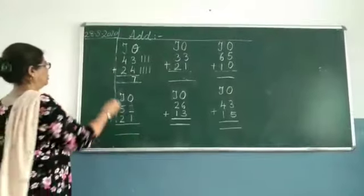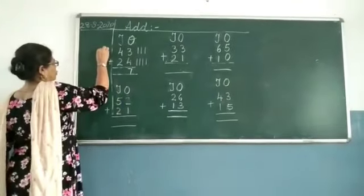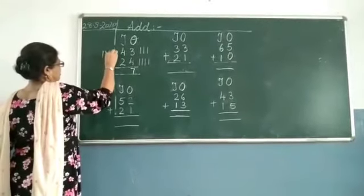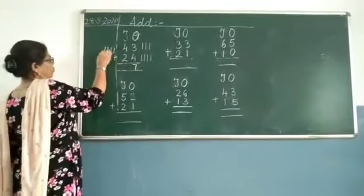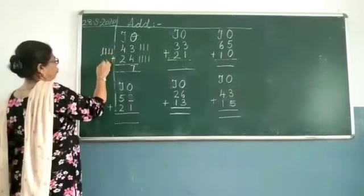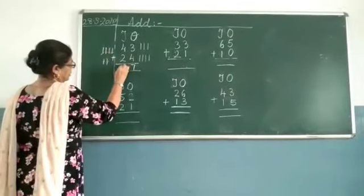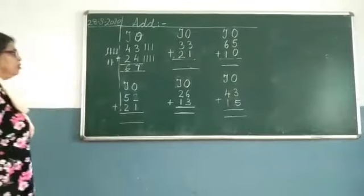4 plus 2. Now first you are going to draw 4 lines. Then here 2. Then count them all. 1, 2, 3, 4, 5, 6. Got it?